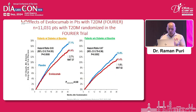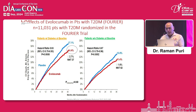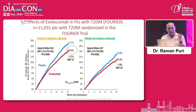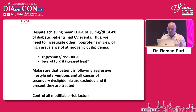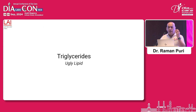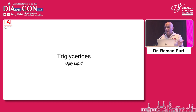The story doesn't end here — 14.4% of patients of diabetes despite achieving LDL cholesterol of 30 mg in the four-year trial still had cardiovascular events. So we have to look beyond LDL cholesterol. The other lipid that comes to mind is triglyceride.